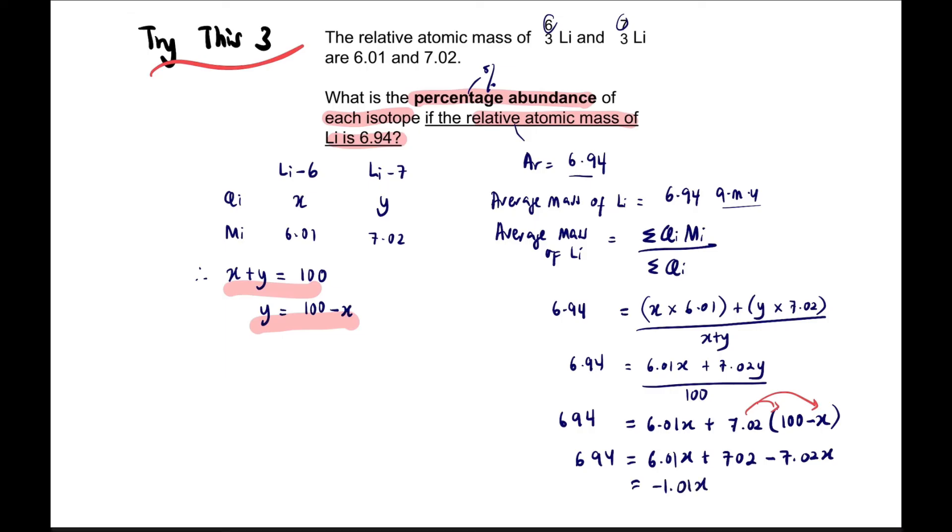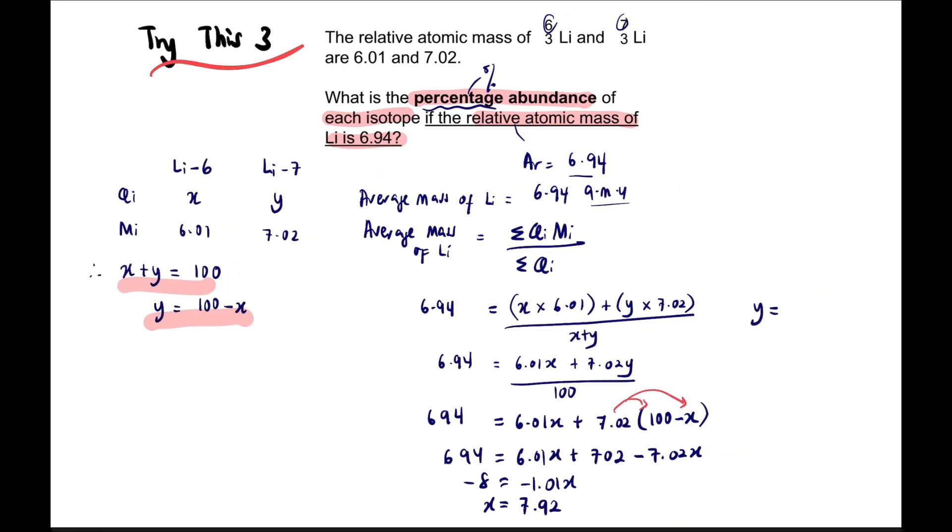Now solve for X. 6.01X minus 7.02X gives negative 1.01X on the left side. On the right side is negative 8. So X equals negative 8 divided by negative 1.01, which gives 7.92. This is the percentage abundance for X.